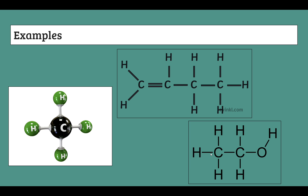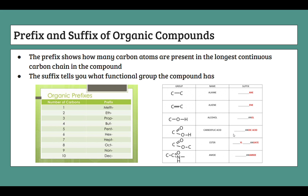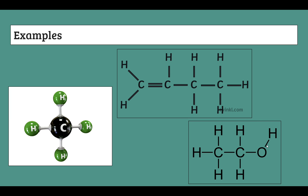Looking at the next molecule: this is definitely not an alkane because we can see an O, which never appeared in the alkane functional group. Looking at our table, an alcohol has an O–H group, and that's exactly what this molecule has. Now we count the longest continuous chain of carbons: one, two. Two carbons means our prefix is eth-, giving us ethanol.